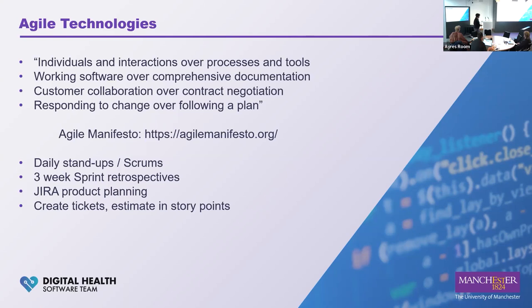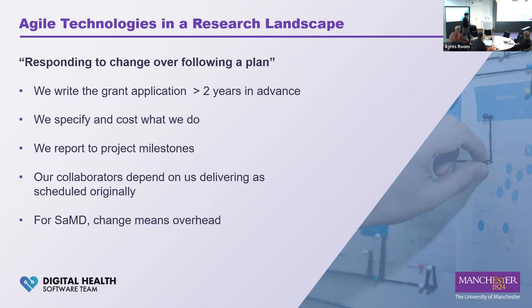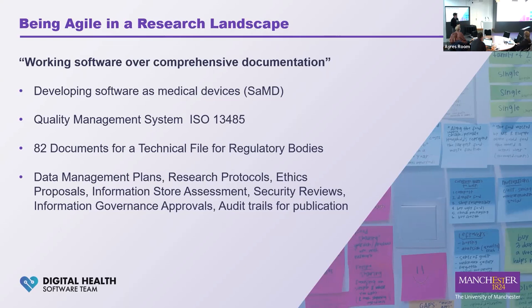But when you put agile into a research landscape it doesn't quite go to plan. We typically get involved in a research grant application maybe two years in advance, specify and cost what we want to do, report to project milestones, and collaborators depend on us delivering what we said in the grant application. For software as a medical device, change means overhead — all the documentation has to change. Agile says working software over comprehensive documentation, but if we're developing software as medical devices we have a raft of documentation to prepare: there are 82 documents for submission to the MHRA if you're a Class 2 medical device, plus quality management systems on top of the usual research documents, data management plans, and research ethics.